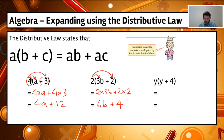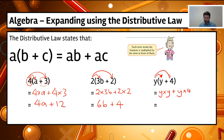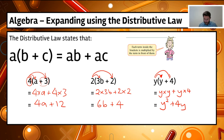Over here we've got a pronumeral — a variable — outside the bracket. We multiply y by both terms inside: y times y, and then y times four. y times y gives me y squared, and y times four gives me plus 4y. You can see the distributive law working simply there.